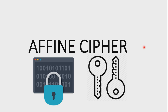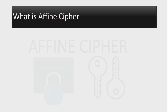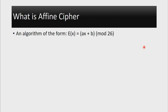Hello everyone and welcome to Cryptography Home. In this video, I will be explaining the Affine Cipher. So what is the Affine Cipher? An Affine Cipher is simply an algorithm of the form E(X) = AX + B, and like the other cryptosystems that we will be looking at, this one will also be working in mod 26.